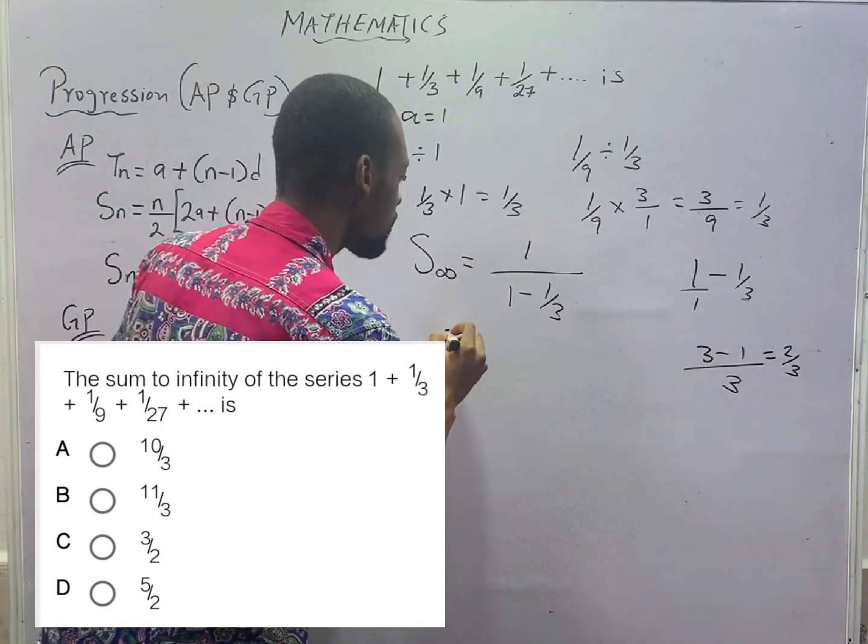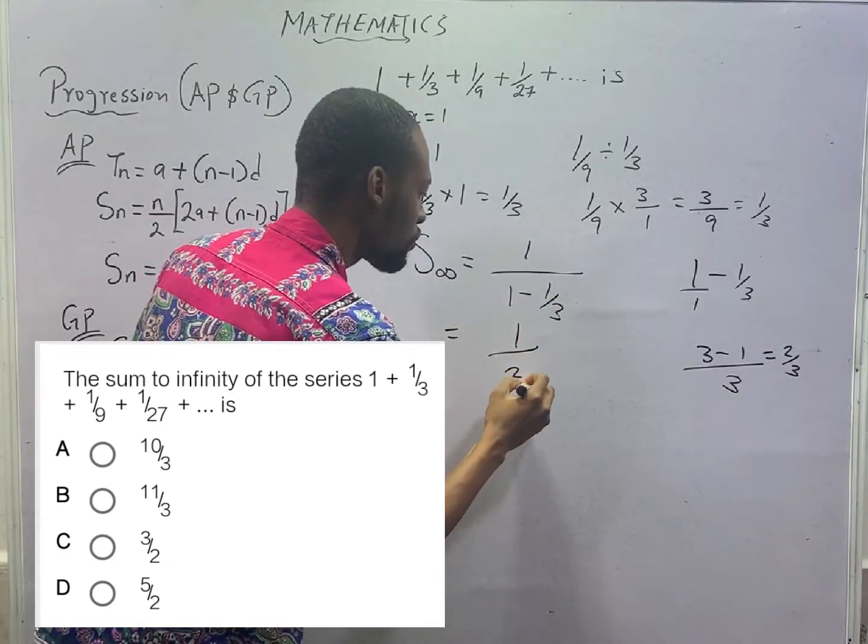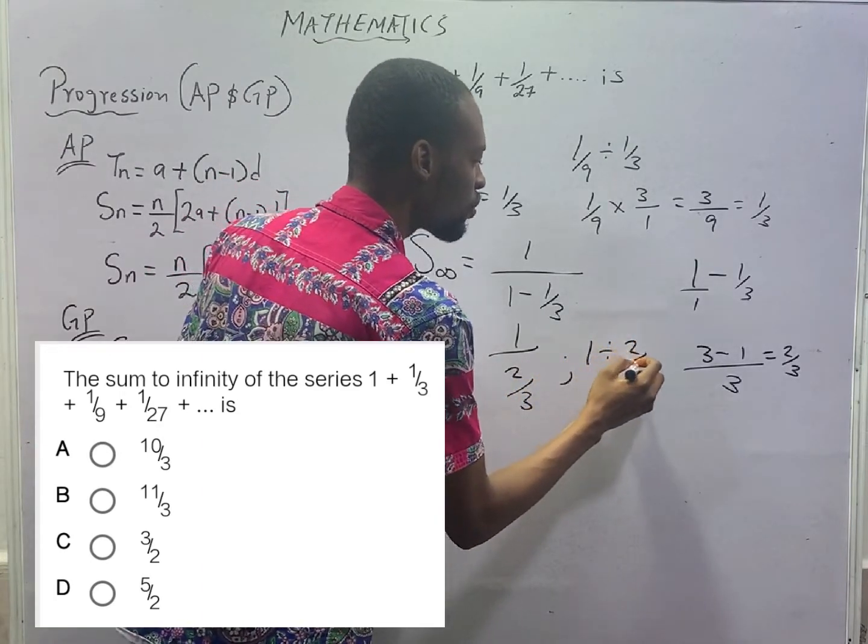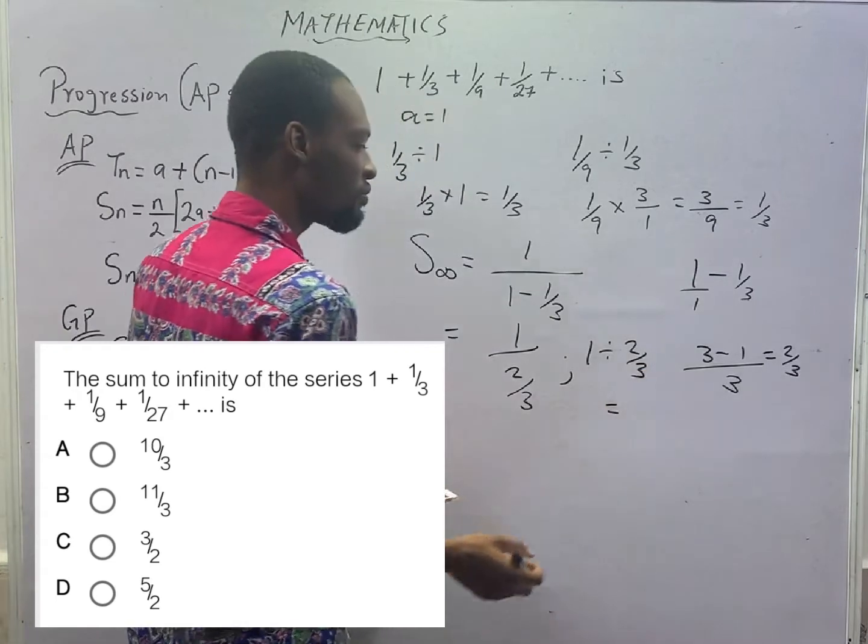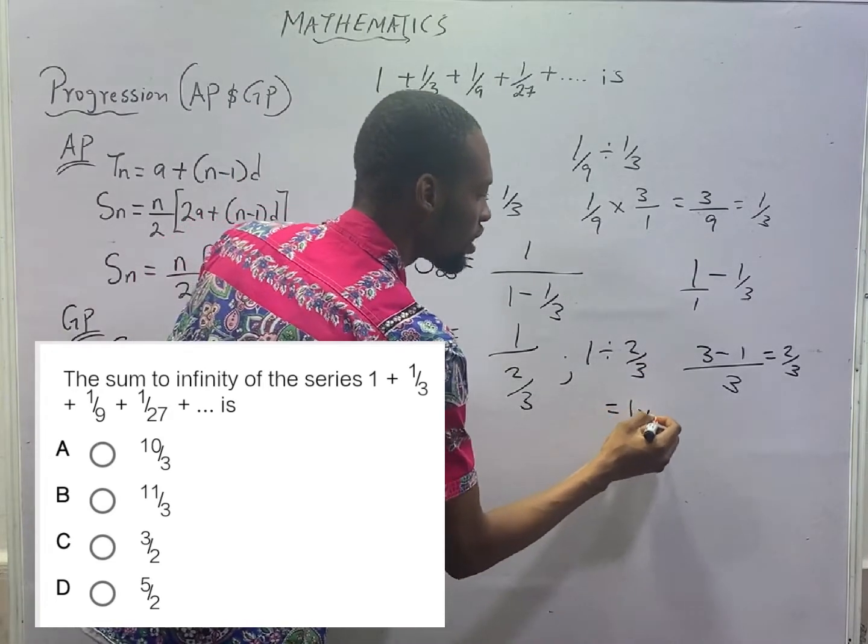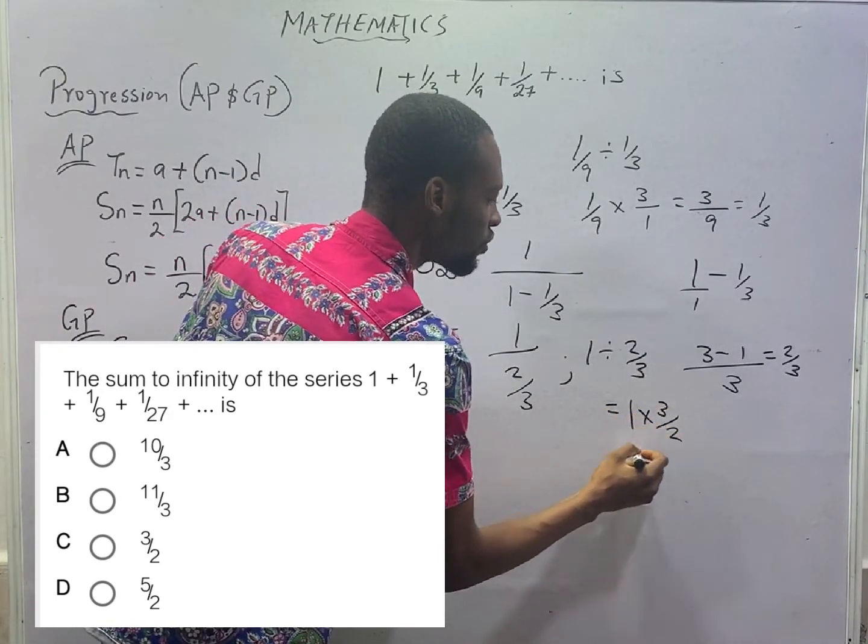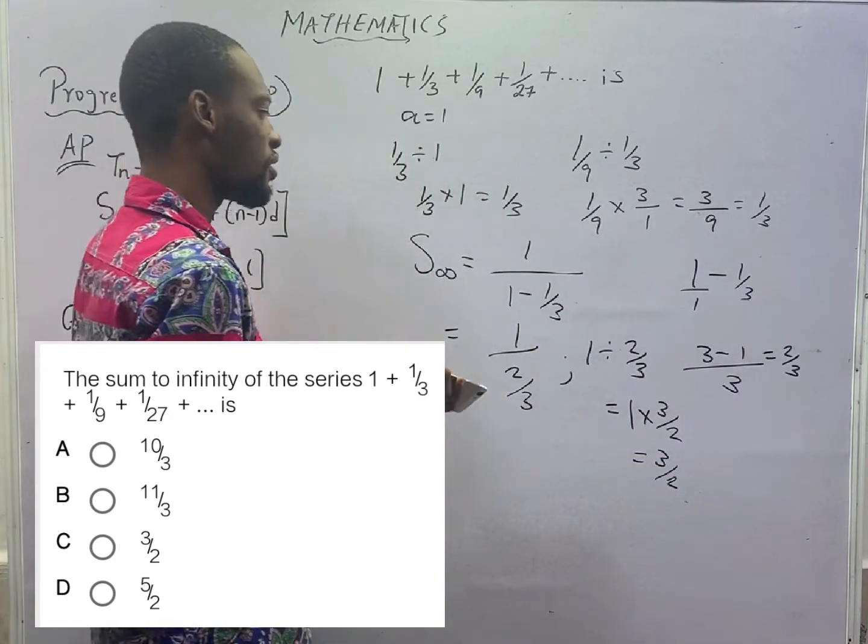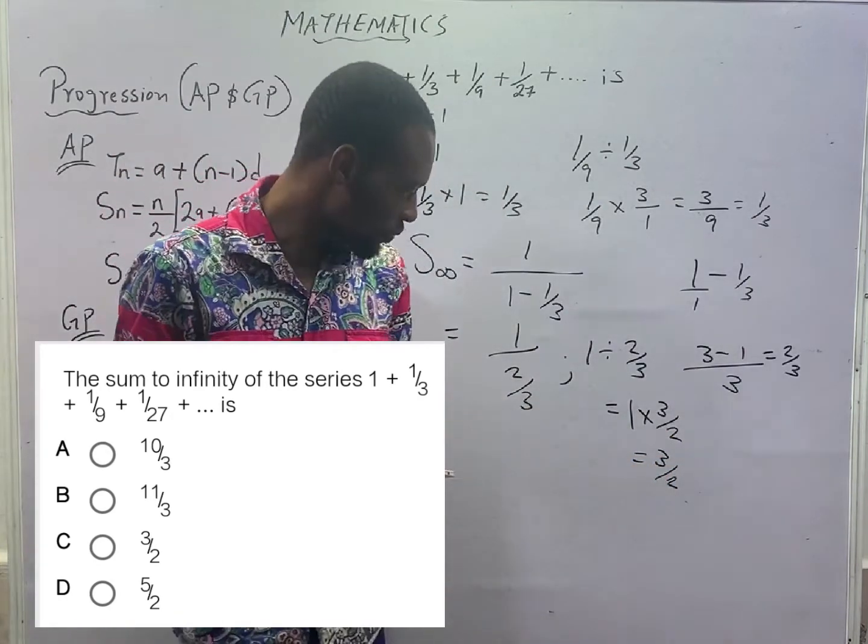Sum to infinity is 1/(2/3), which is the same as 1 times 3/2. This is 3/2. 3/2 is the sum to infinity.